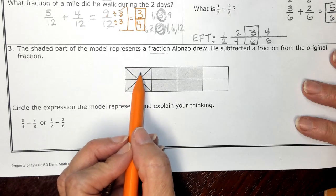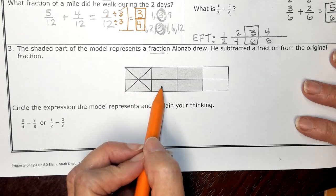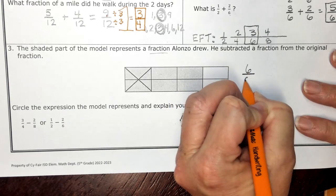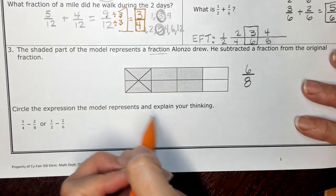And the shaded part is one, two, three, four, five, six pieces out of eight, because there are eight total.